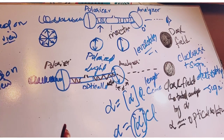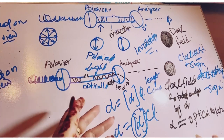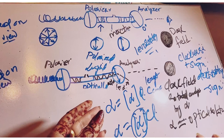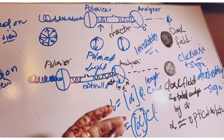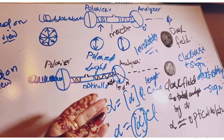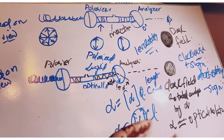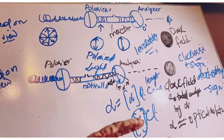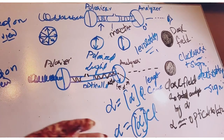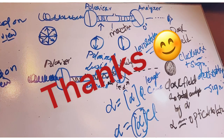To summarize: optical activity is a property measured by a polarimeter, which consists of two polarizers with a sample placed in between them in the light beam. Since optical activity varies with wavelength, monochromatic light — specifically the sodium D line at 589.3 Ångströms — is used. Thank you very much.